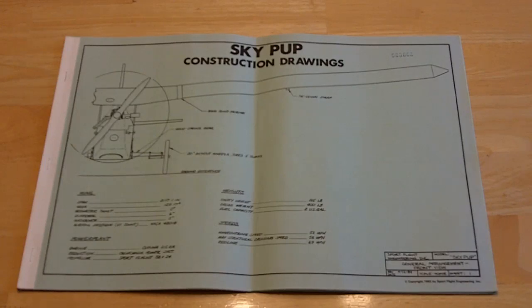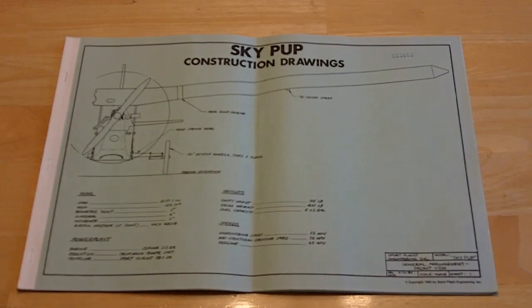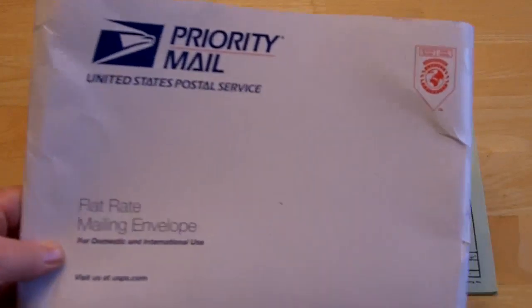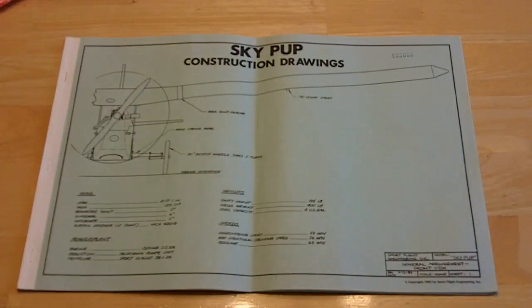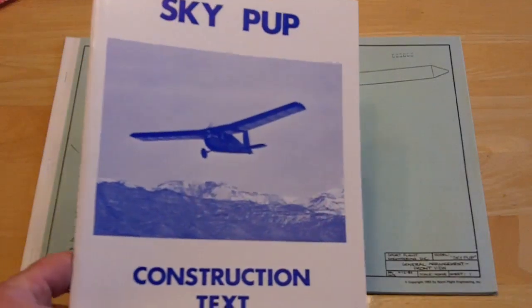I had ordered it, I think about 70 bucks rings a bell. I sent a money order and it took a couple weeks. It came in this priority mail, folded up, and it has a set of drawings and the builder's manual.